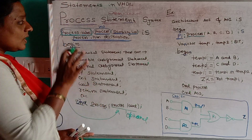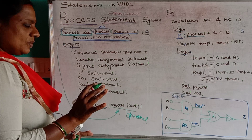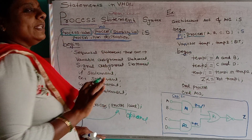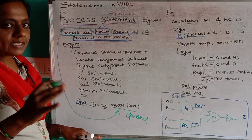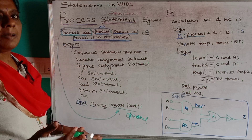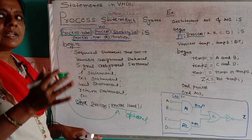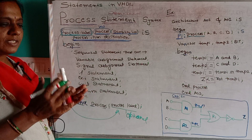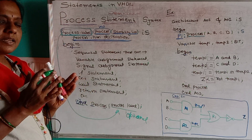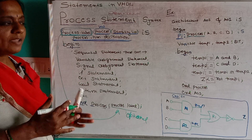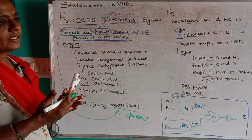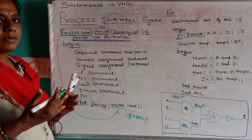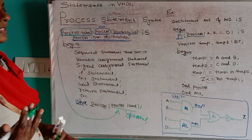Writing the process label is optional. That means if you want, you can write the process label in your program; if not, you can leave it. But writing the process label is a good habit, because if more than one process is present in the program, it is very easy to identify where the first process begins and where it ends. And similarly for the second and third.